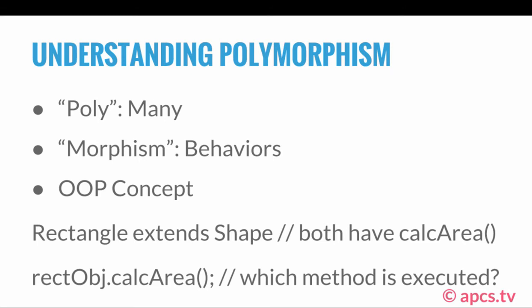As we look at examples of polymorphism, you'll understand better exactly what it is. Let's take a quick example. Say we have two classes: the Rectangle class and the Shape class. The Shape class is the superclass and the Rectangle class is the subclass. We have Rectangle extends Shape, which establishes the inheritance relationship. Now let's say both classes have the calcArea method. The real question is: which method is executed?